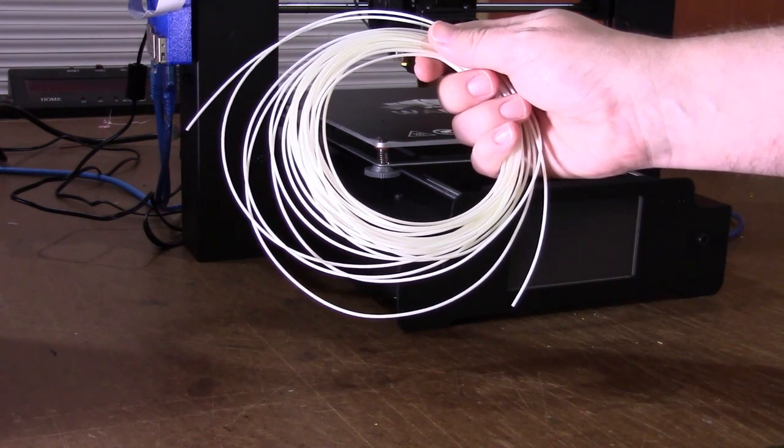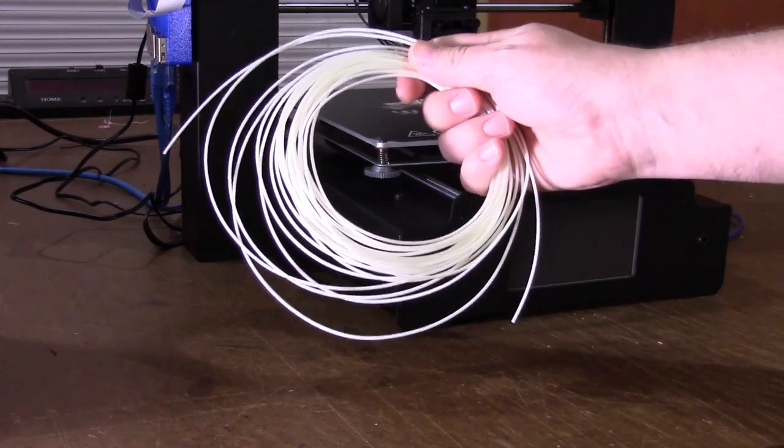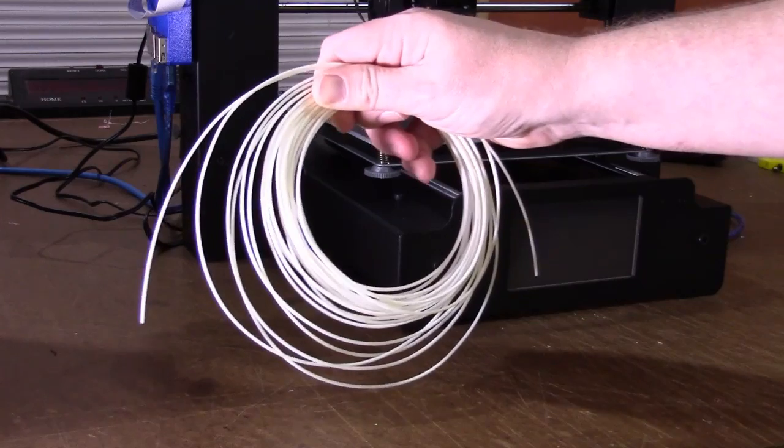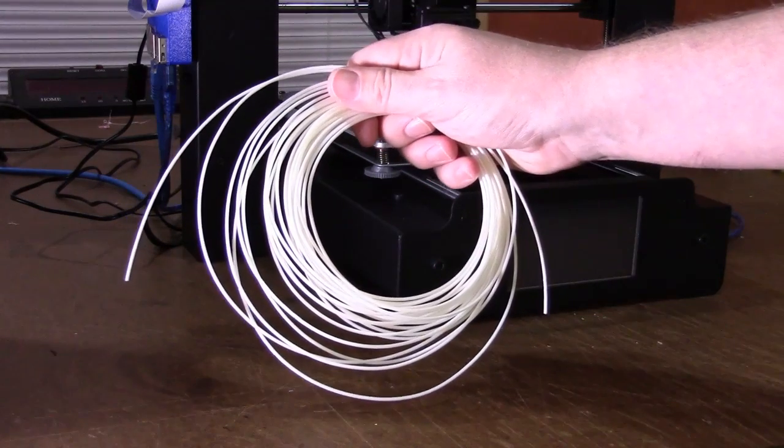This is a filament test of Kai Parthi's Porole Layfelt. This does need to be soaked in water for one to four days after you print to remove the plastic base.